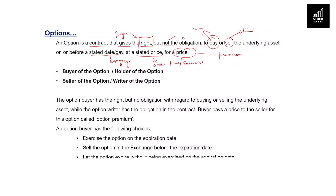Now in any contract, whether it is a call option or put option, when I say buyer of the options, I am talking about buyer of the contract — not the currency, not the commodities. The buyer of the option can also be called the holder of the options. The other party is the seller of the options, also called the writer of the options.